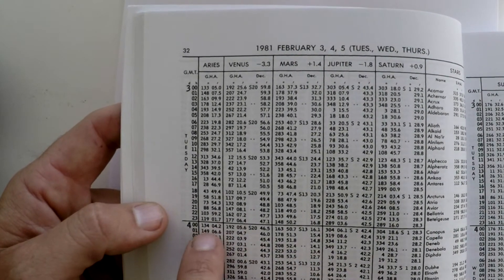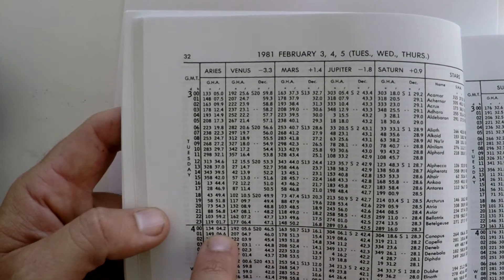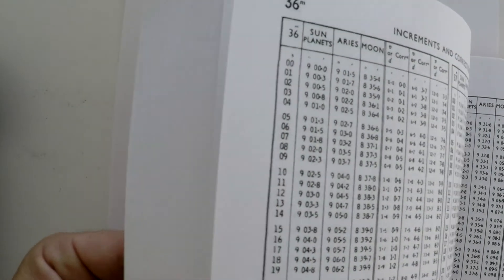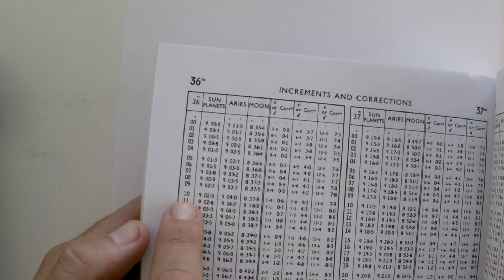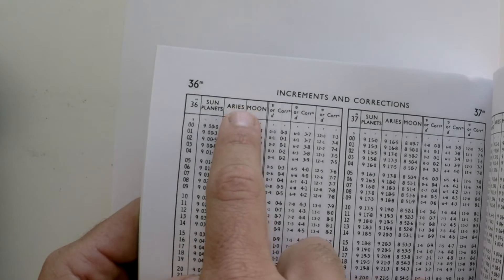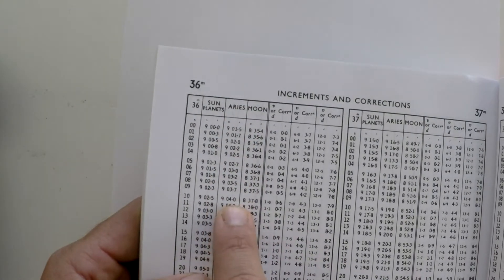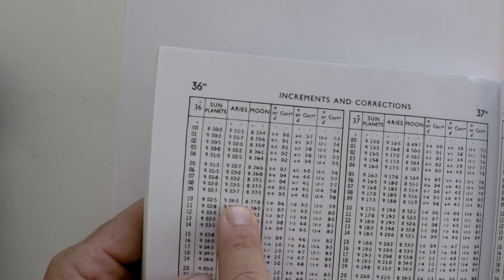In order to do that, we would write down the base GHA for Aries, and then use the increments and corrections pages in the back of the nautical almanac for say 36 minutes and 10 seconds. There's an Aries column there. We need to add a correction of 9 degrees, 04.0 minutes.